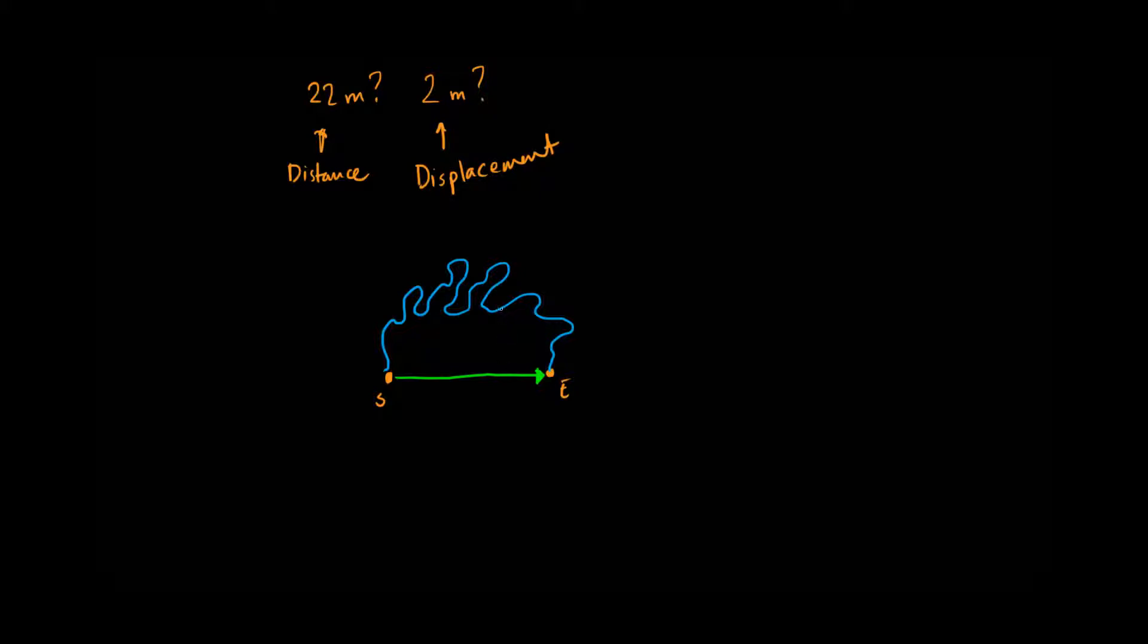Displacement always has a direction. Since displacement has both a magnitude and a direction, we can say that this is a vector. And since distance just has a magnitude, we call it a scalar.